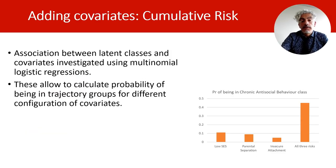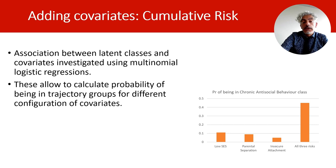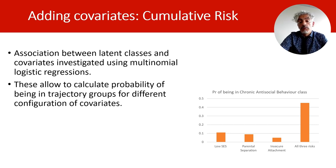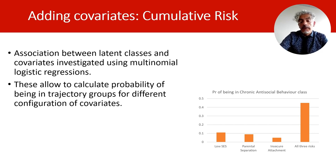Here I display a fictional example where the vertical axis represents the probability of adolescents being in a chronic antisocial behavior trajectory group. The probability of being chronically antisocial is relatively low when adolescents are exposed to only one risk factor — low socioeconomic status, parental separation, or insecure attachment. But if adolescents are exposed to all three factors over time, the risk of being in the chronically antisocial group is significantly higher. This is an example of how we can use these approaches to investigate cumulative risk.